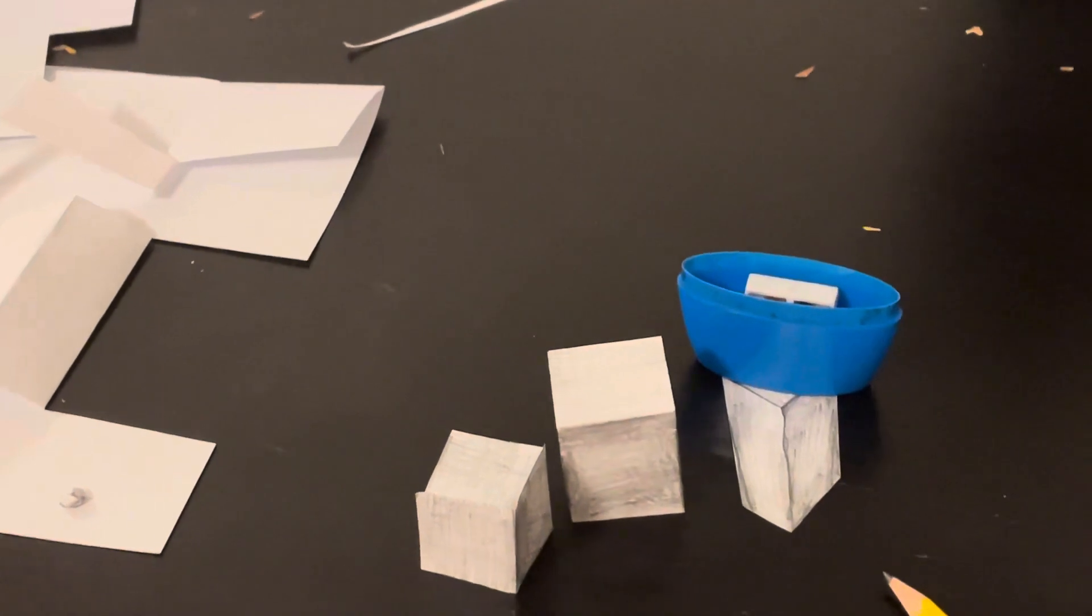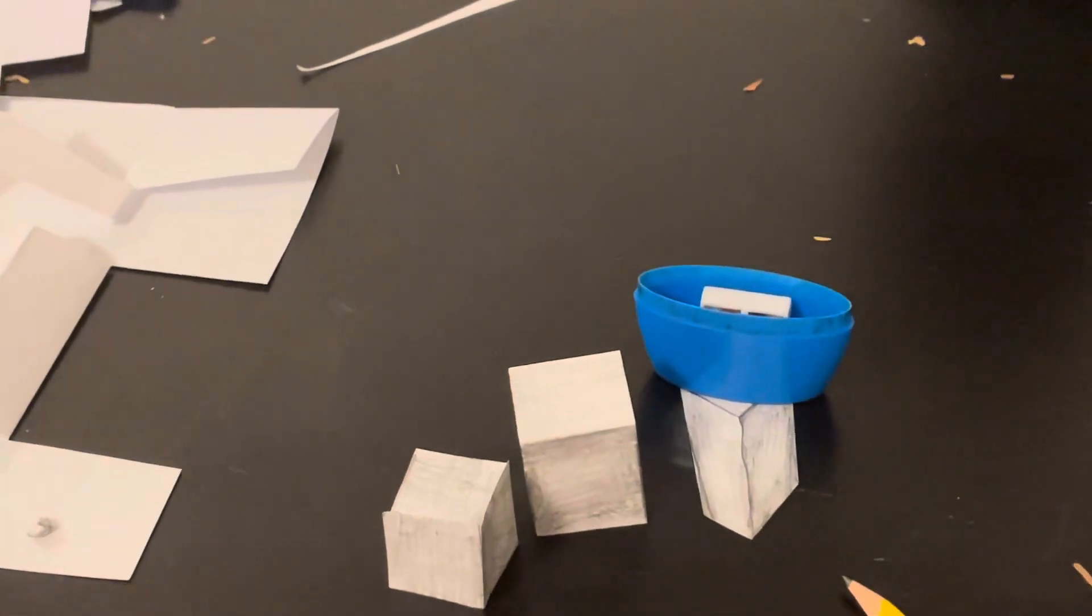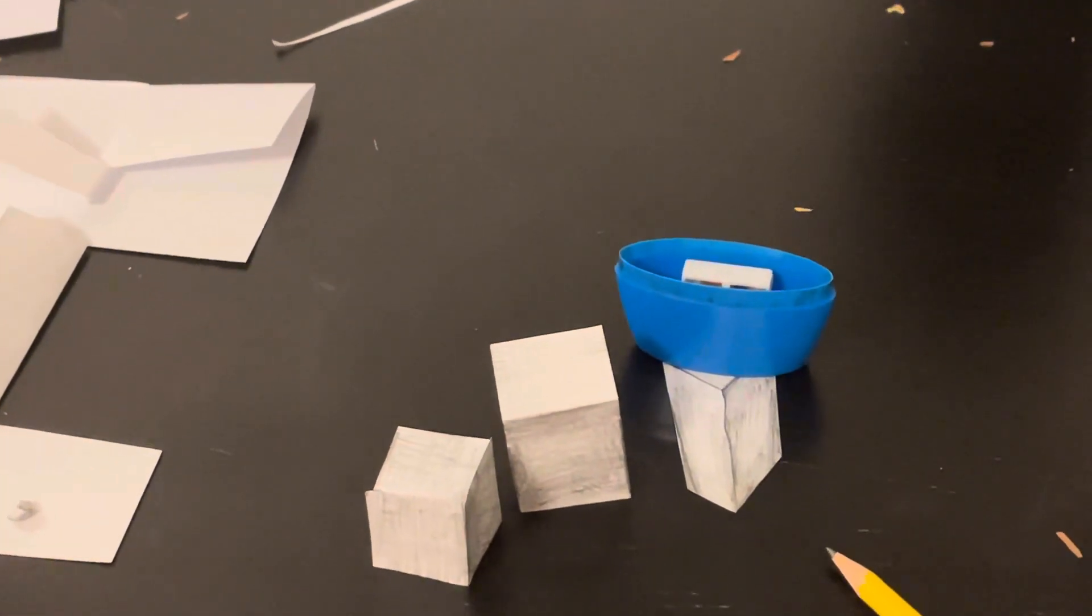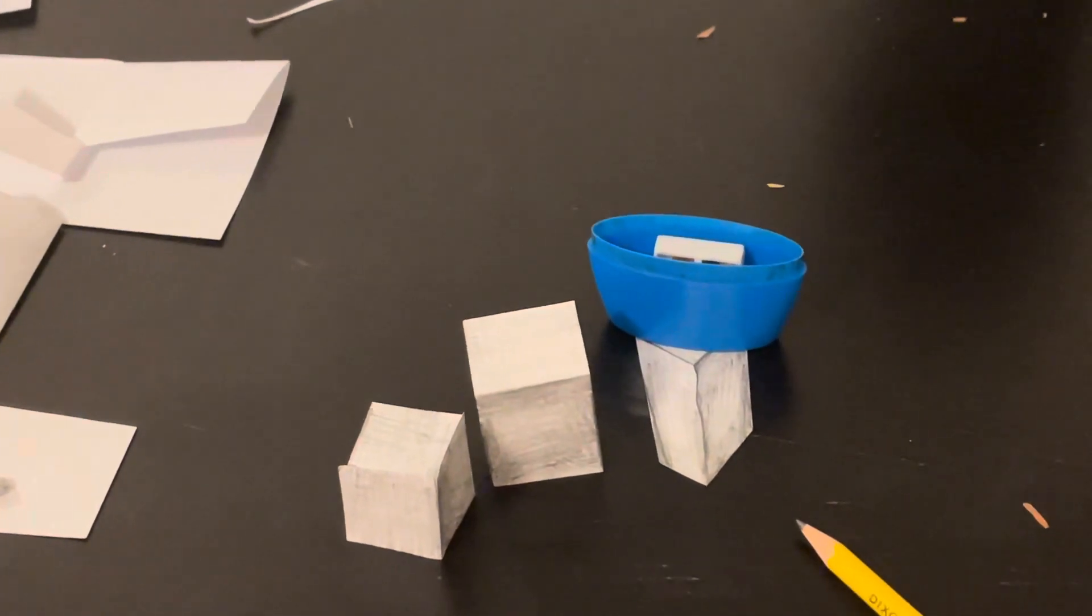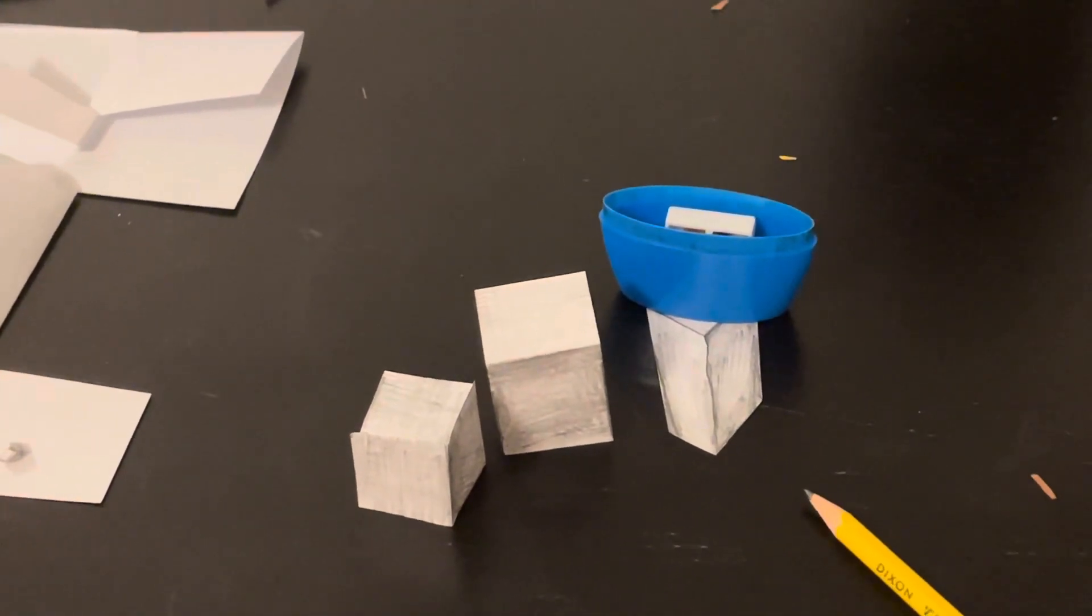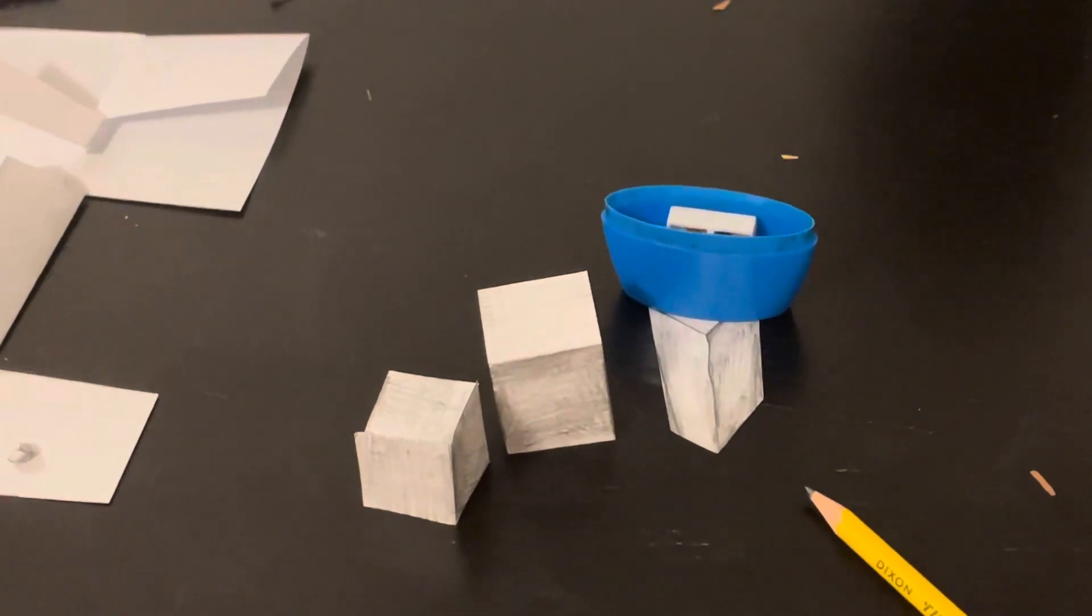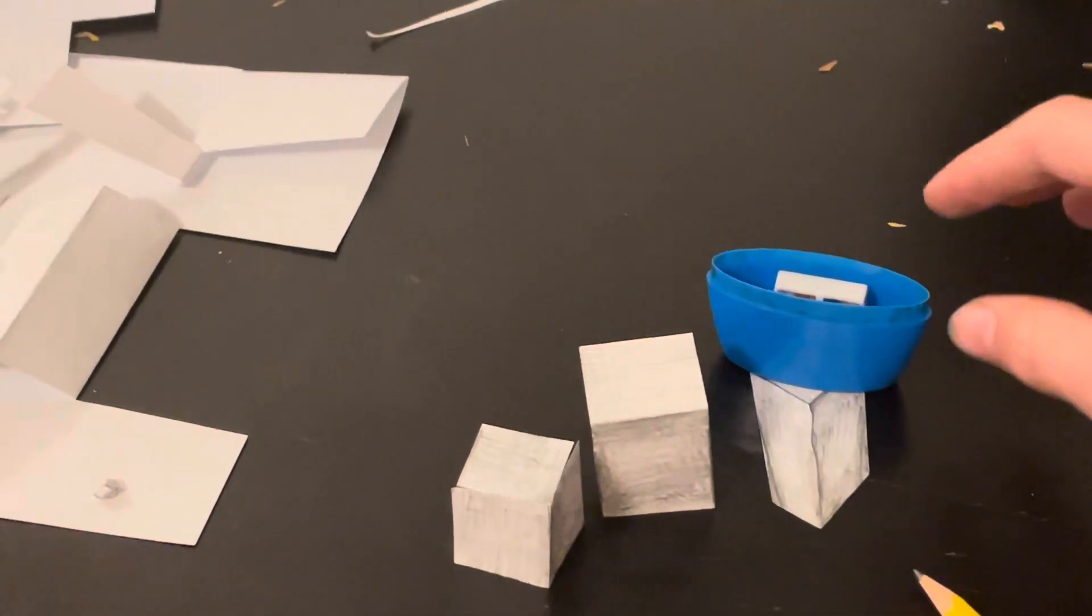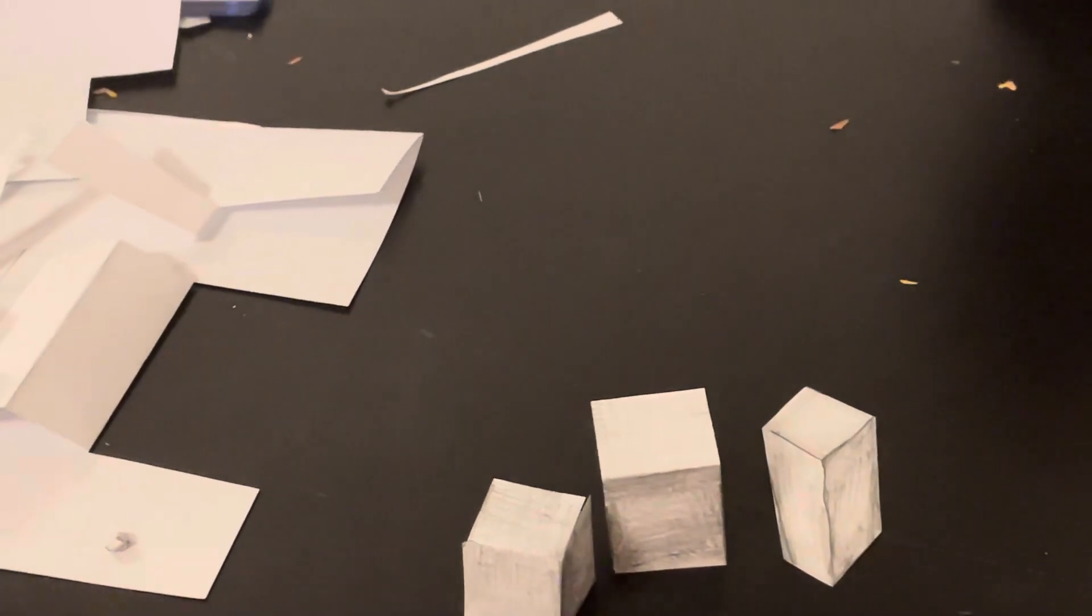So first off, I can't really see how the pencil sharpener is just bouncing on the piece of paper. But it gets bigger.